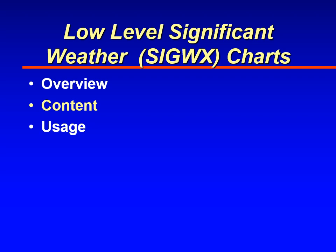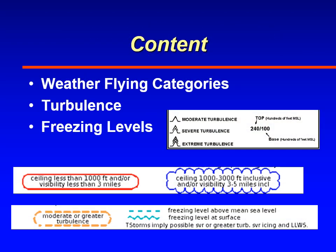The content of the Low-Level Significant Weather Prognostic Chart includes areas of weather flying categories — whether IFR, MVFR, or VFR conditions — as well as turbulence and freezing levels. Shown here is the symbology used to depict turbulence, IFR and MVFR conditions, and freezing levels.